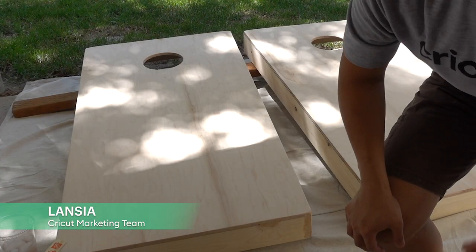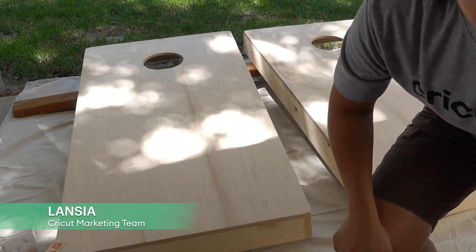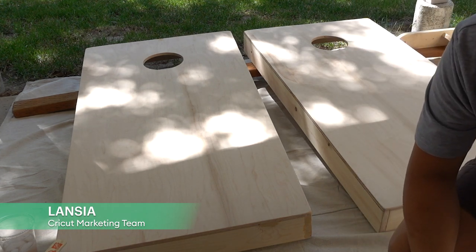Hi y'all! This is Lancey with Cricut. I'm going to show you how I decorated my cornhole boards with wood stain, glow-in-the-dark paint, and resin using Cricut stencils and Cricut iron-on.